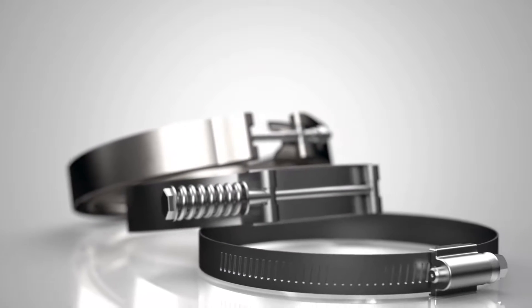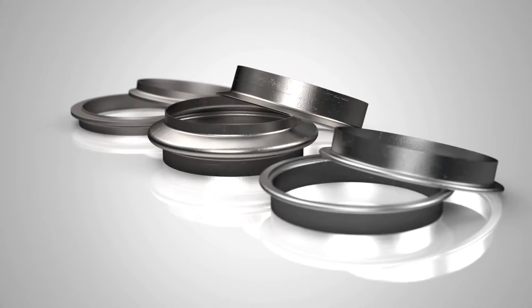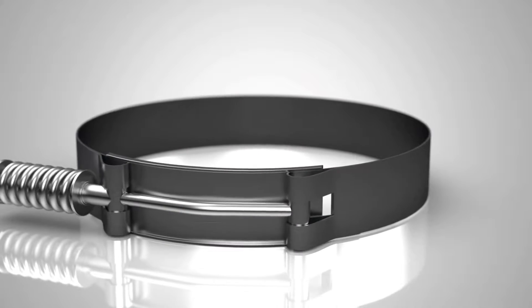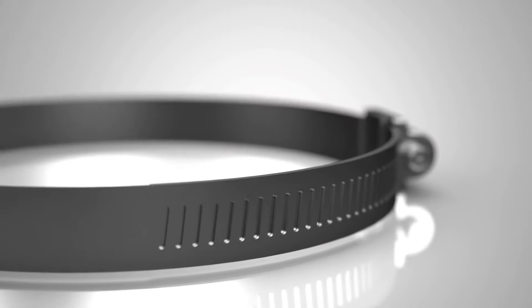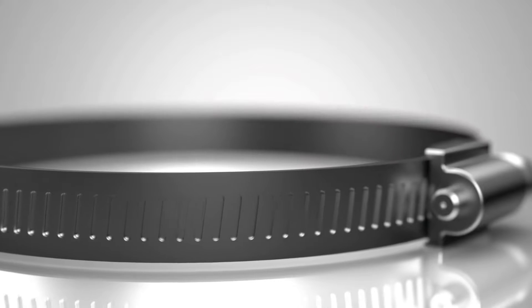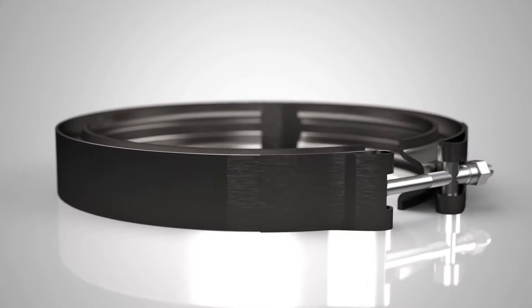Our common clamp styles include V-band, butt joint, lap joint, band, U-bolt, T-bolt, worm drive, fuel injector, one-ear pinch, and rubber insulated clamps. Allow us to show you our wide range of clamps and flanges. We are here to discuss your needs with cost-effective solutions.